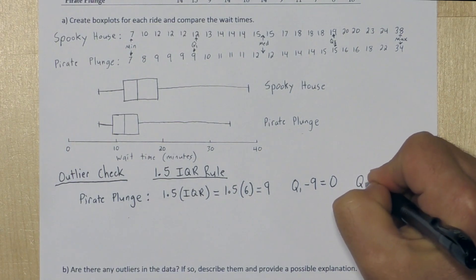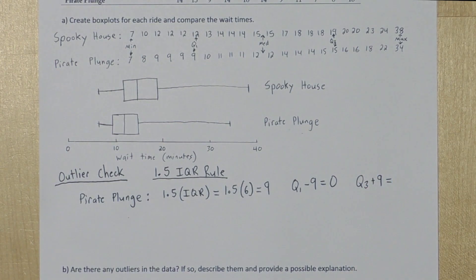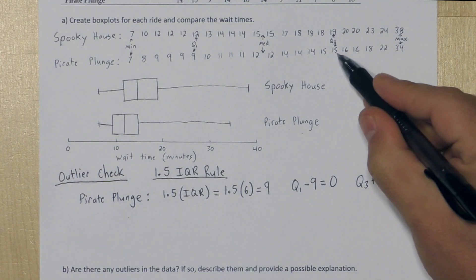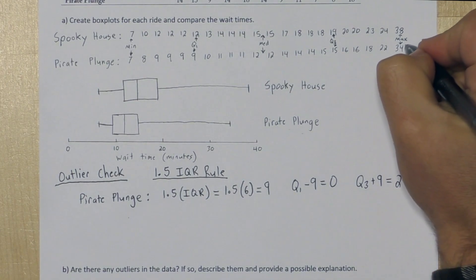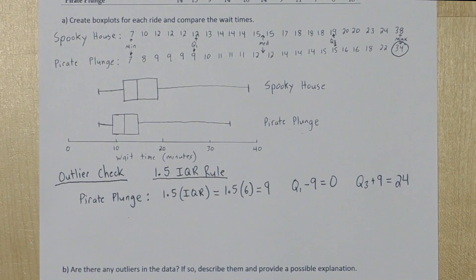Now let's check for upper outliers. To check for upper outliers, we're going to go to quartile 3 and add the 9 to it. So for Pirate Plunge, quartile 3 is 15. When we add 9, we get 24. Now one of the waiting times exceeds 24, this 34 right up here. So that 34 is an upper outlier.